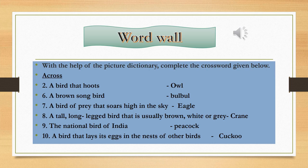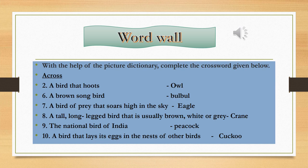Let's do the word wall. On page number 57, some pictures of birds are given: cuckoo, woodpecker, crane, flamingo, hornbill, peacock, pigeon, bulbul, owl and eagle. A crossword puzzle is also given there. I am writing only the answers. For the across answers: a bird that hoots is an owl. A brown songbird is a bulbul. A bird of prey that soars high in the sky is an eagle. A tall, long-legged bird usually brown, white or grey is a crane. The national bird of India is peacock.